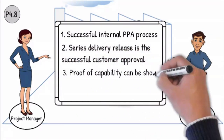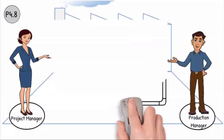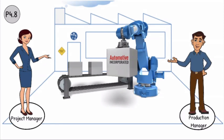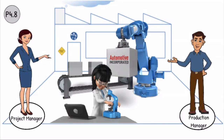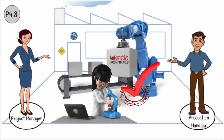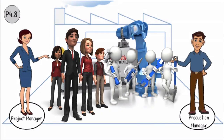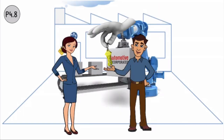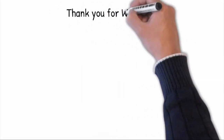3. Proof of capability can be shown for all special characteristics. We also ensure that the material resources — including buildings, test facilities, laboratory facilities, and equipment — are available and functional; these are available and have been released. The personnel resources are available in accordance with the planning and are qualified to achieve the customer quality and volume requirements. The project can now be handed over to the production manager because all the customer and local production targets have been achieved for serial production. Thank you for watching.